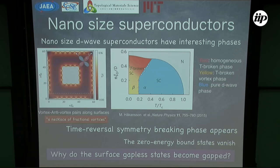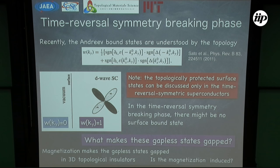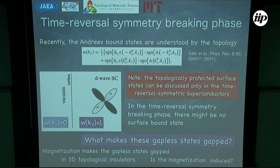So we have the question: why do the surface gapless states become gapped? To understand this, we use a discussion about topology. As I said, the Andreev bound states can be understood by the finite winding number, but this winding number is only defined in the presence of time reversal symmetry. So if there is no time reversal symmetry, then there might be no surface boundary state. We also have the question of what makes these gapless states gap. For example, in three-dimensional topological insulators there are surface gapless states, but if there are many magnetic impurities, the magnetization makes the gap states gapped. But in the d-wave superconductor, even if it is a clean sample, there is a time reversal symmetry breaking phase.